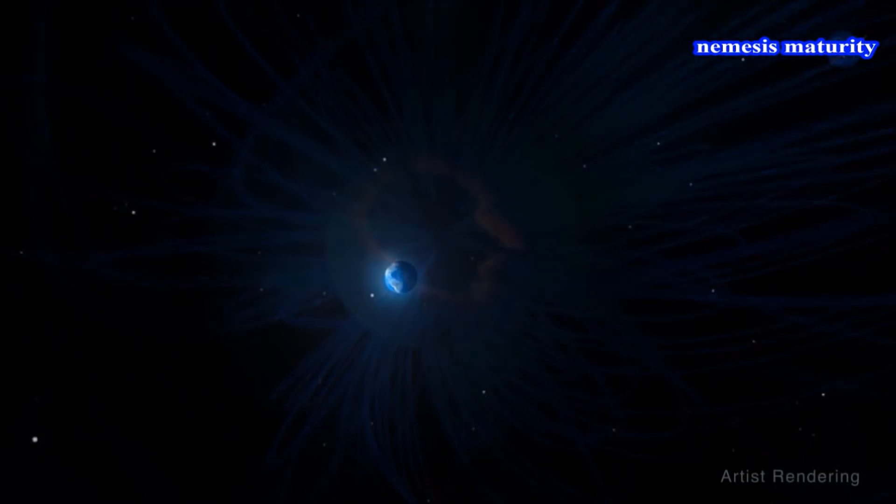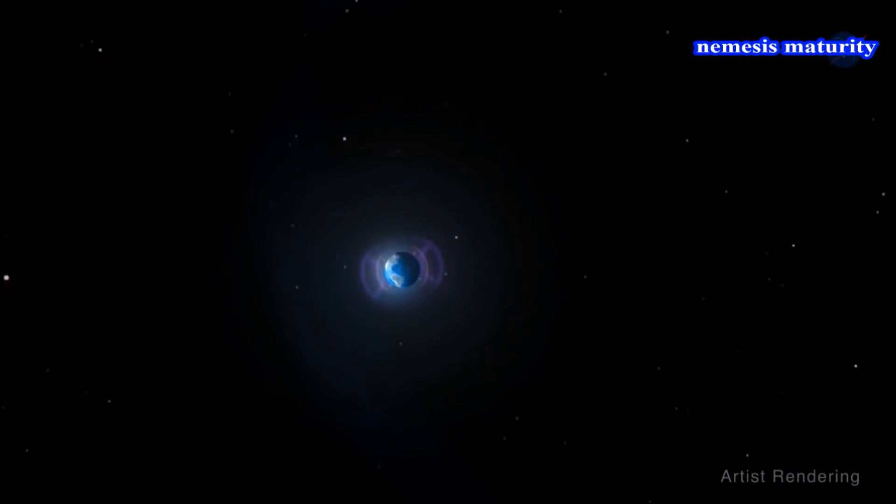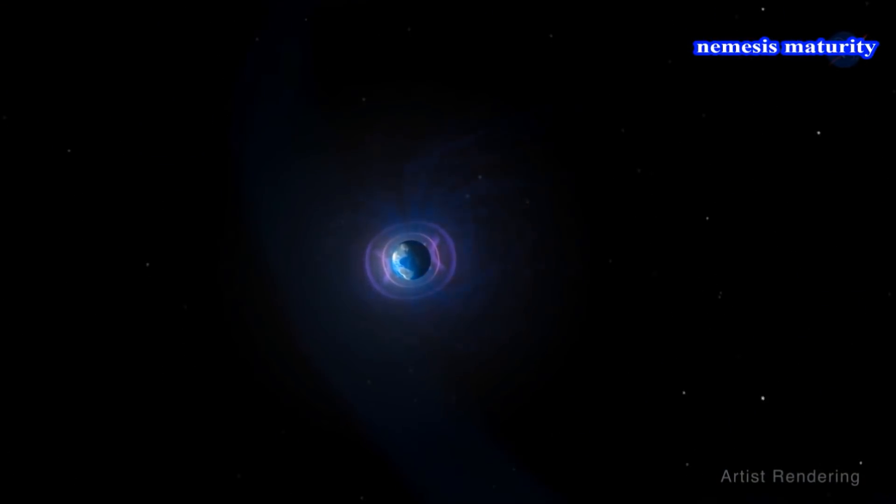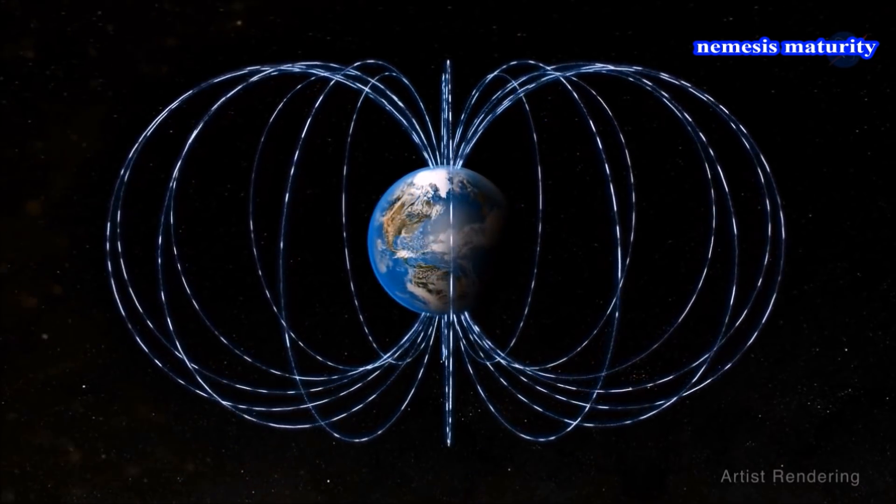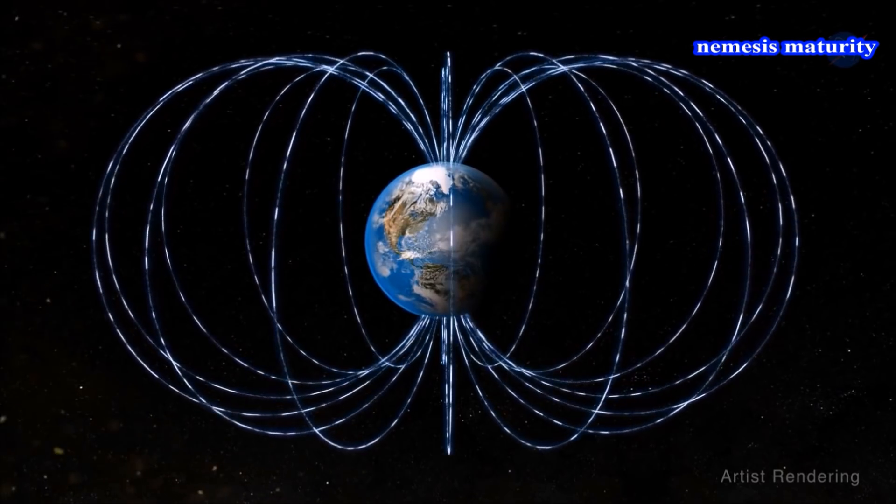Enveloping our planet and protecting us from the fury of the sun is a giant bubble of magnetism called the magnetosphere. It deflects most of the solar material sweeping towards us from our star at one million miles per hour or more.